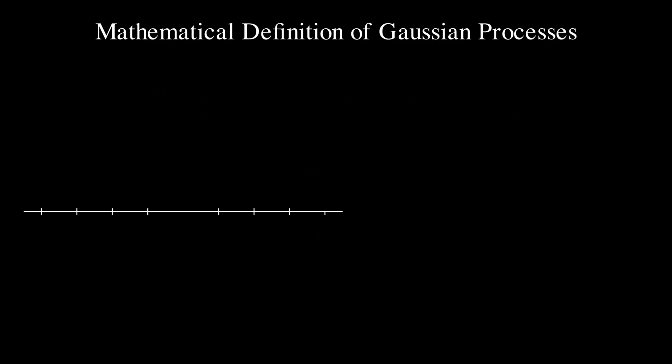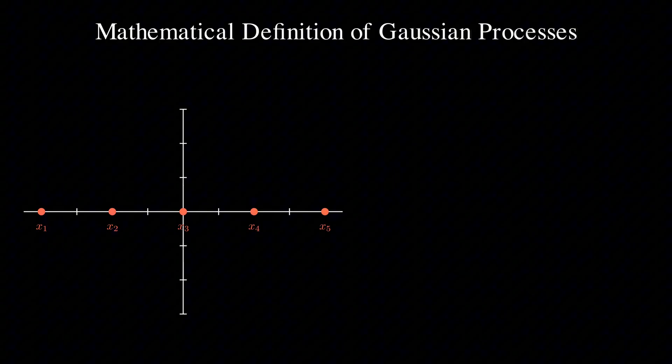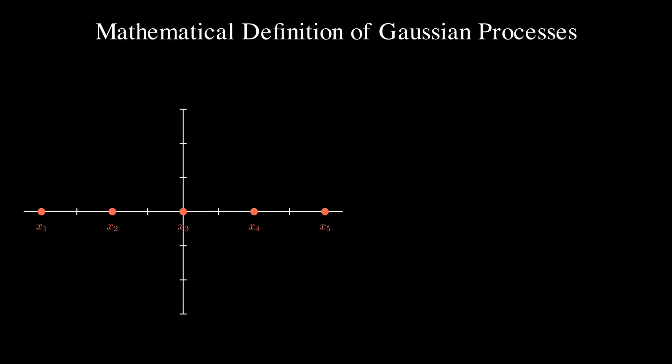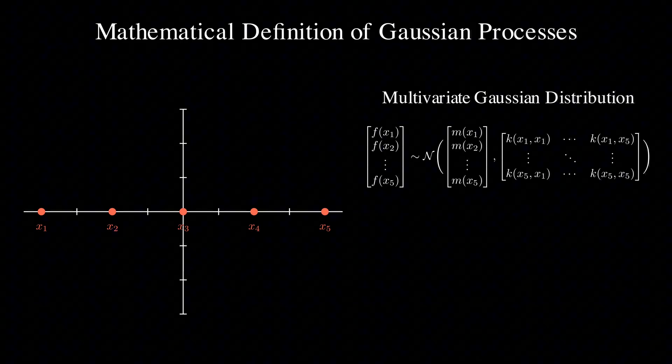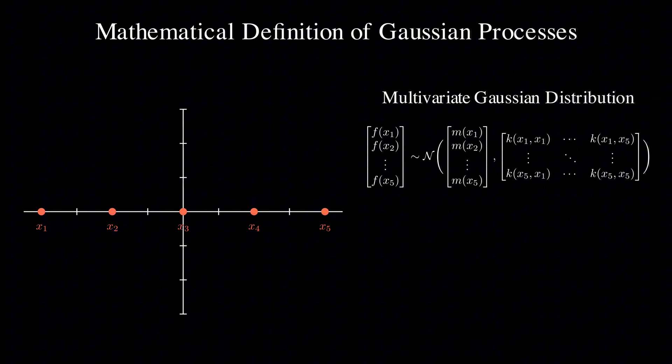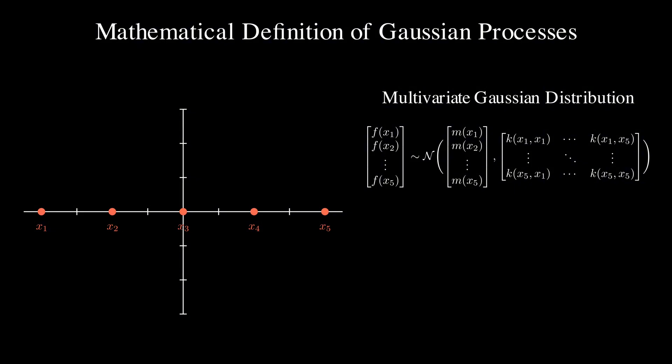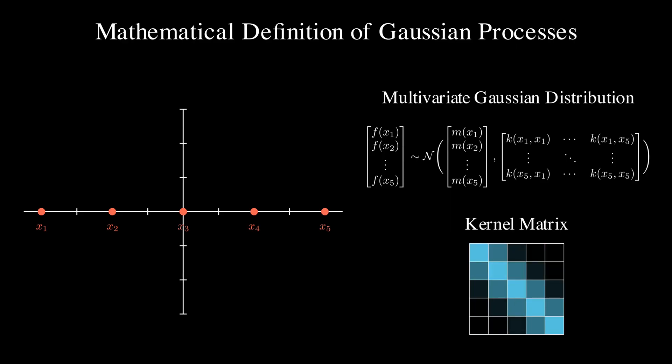Now, let's visualize what this means. Imagine we have just these 5 points along our x-axis. In a Gaussian process, we are essentially saying that the function values of these points follow a multivariate Gaussian distribution. We can write this as a vector of f(x1) through f(x5) is distributed according to a multivariate normal distribution, with a mean vector and a covariance matrix. This covariance matrix is constructed by evaluating our kernel function between every pair of points.